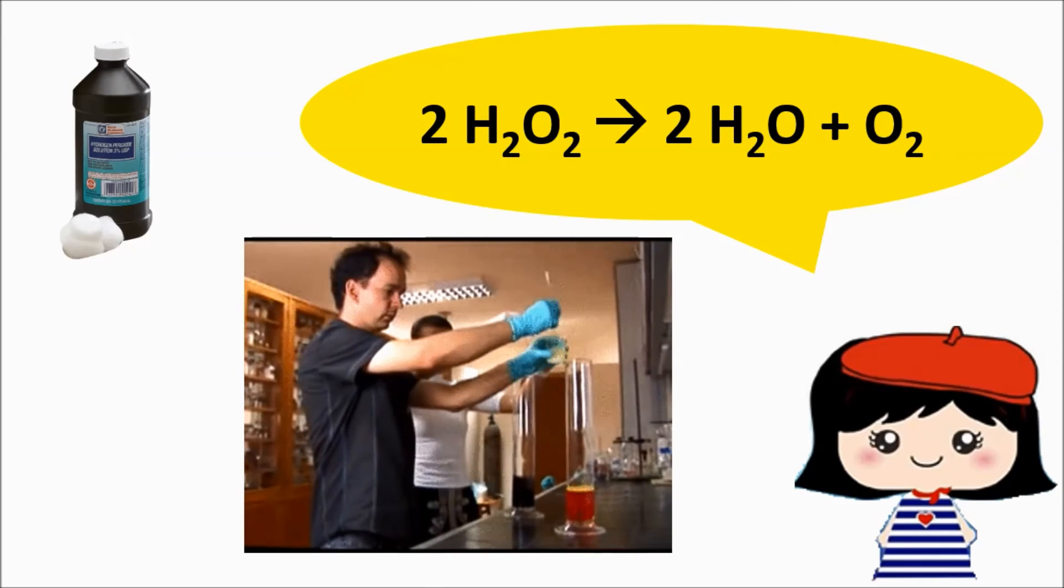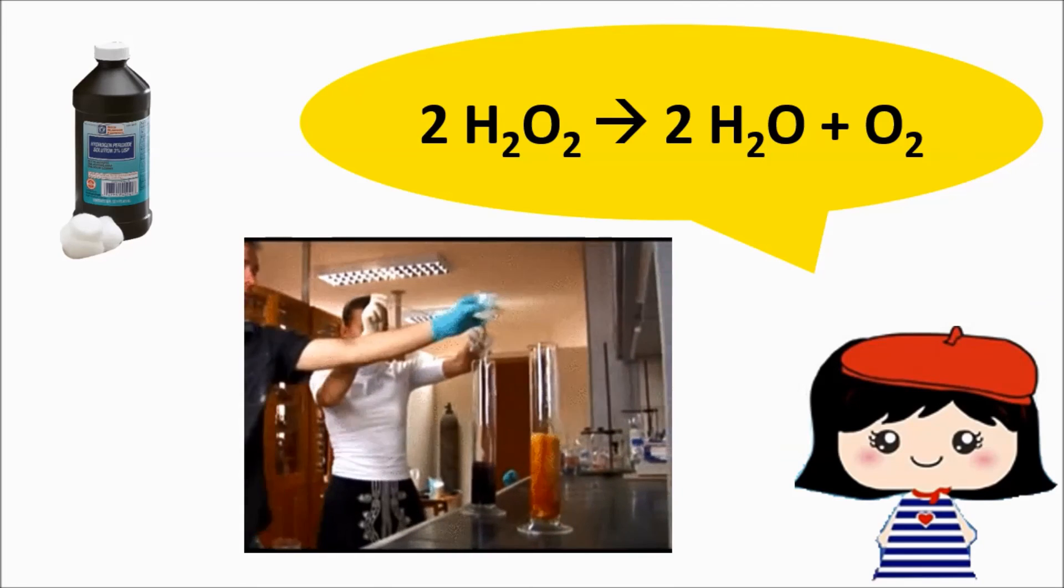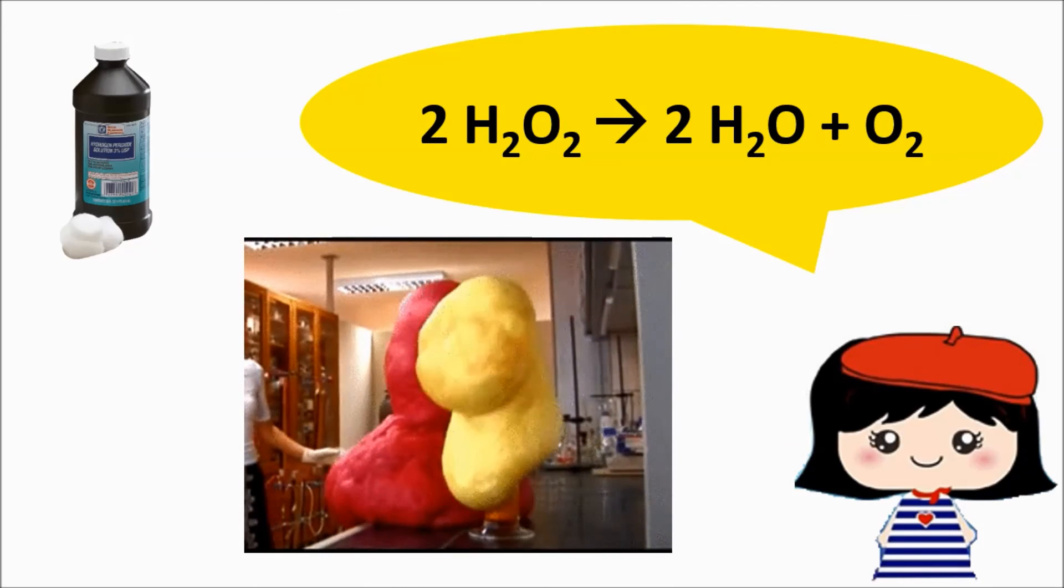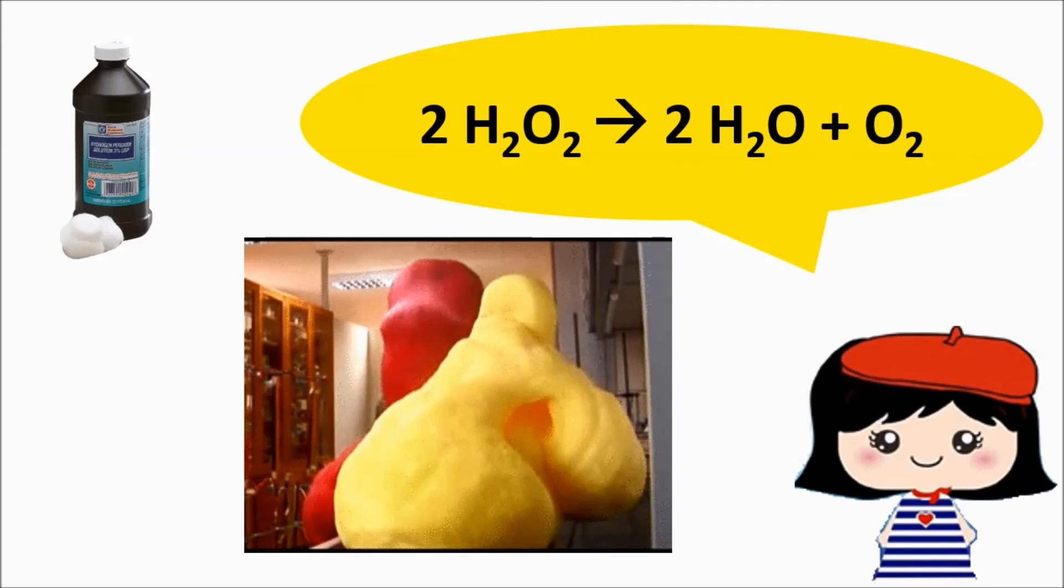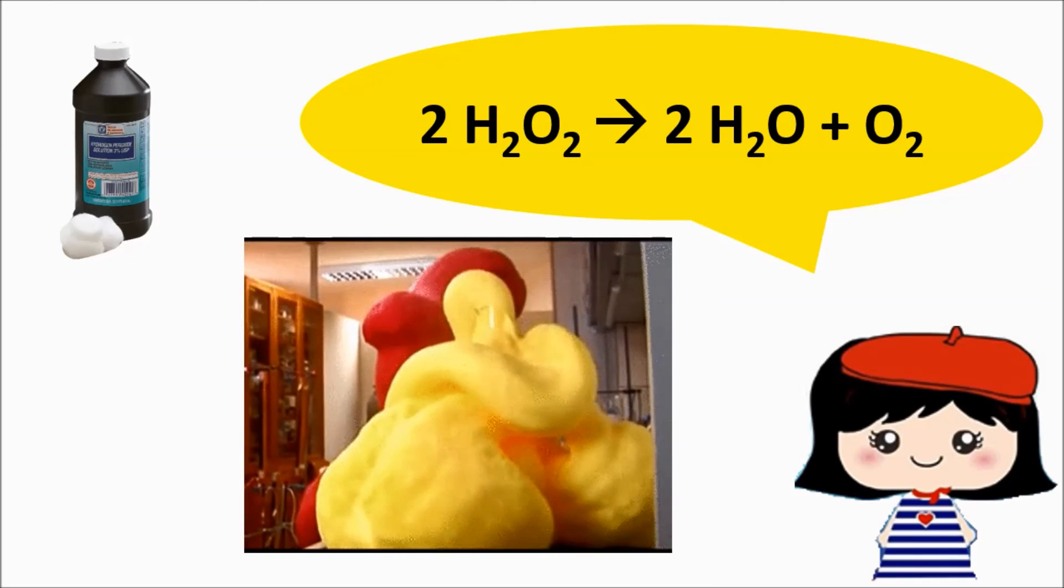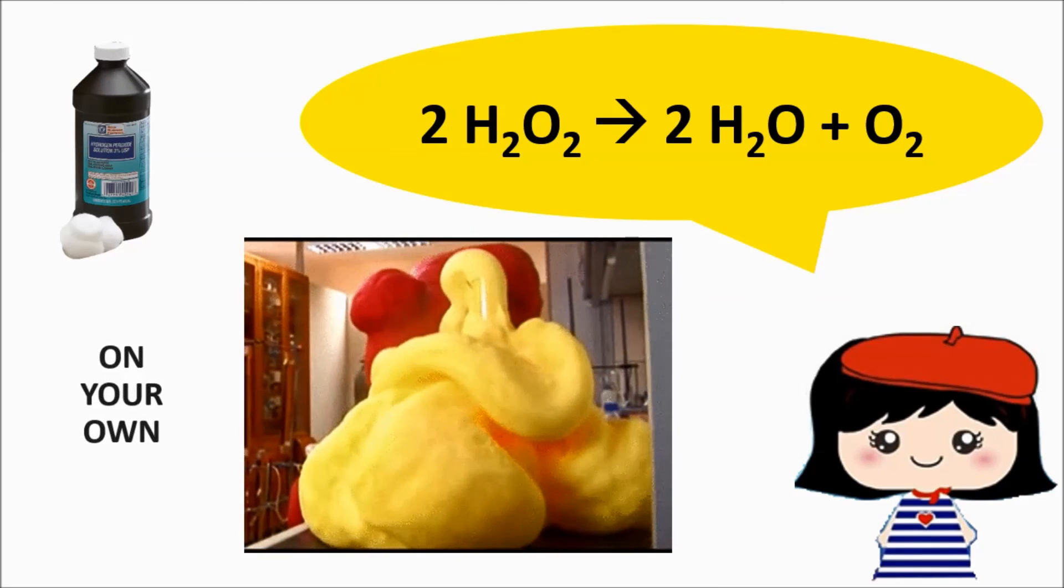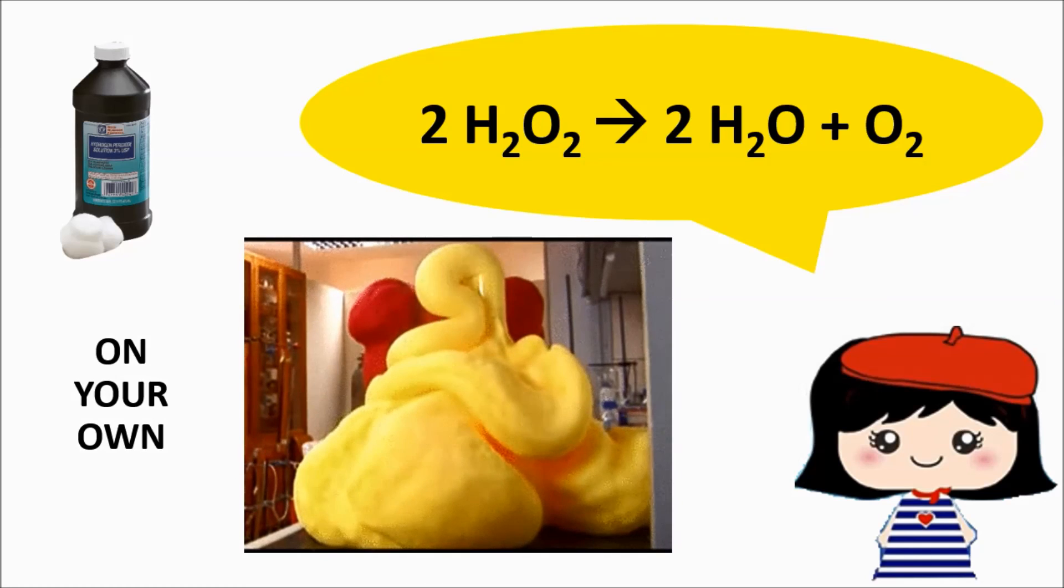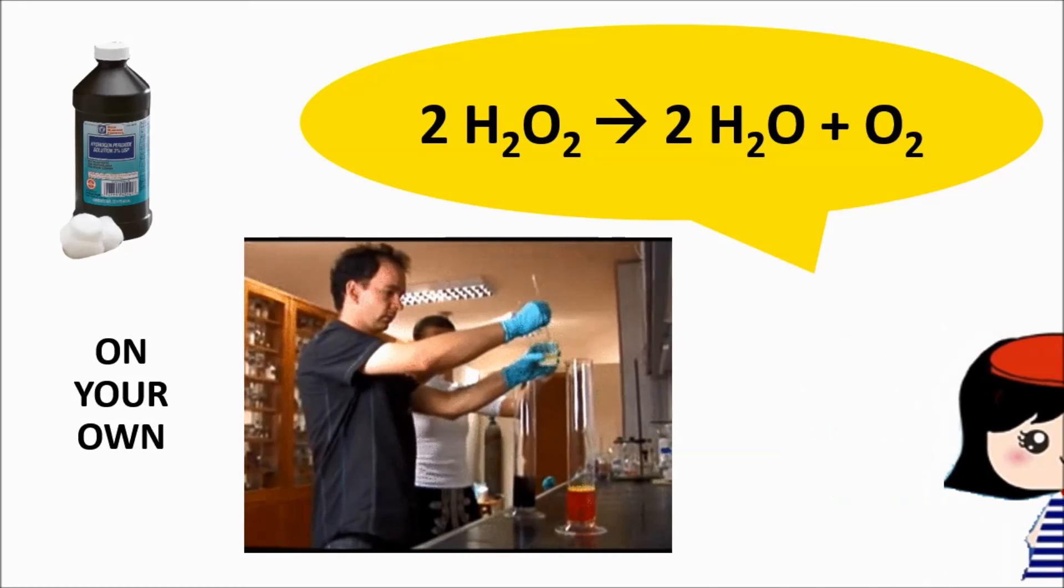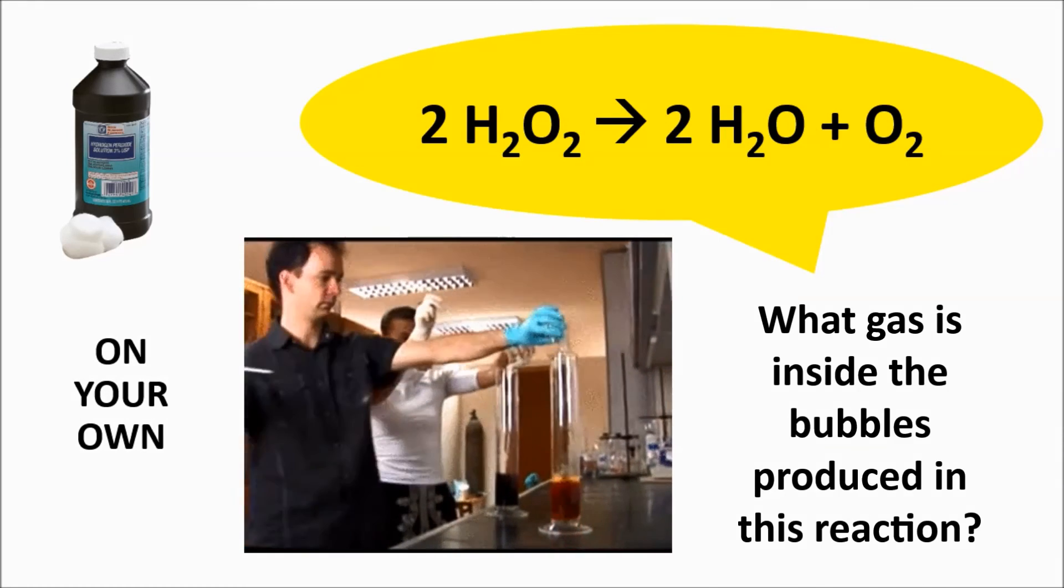Here's a fun reaction you can make with hydrogen peroxide. Just add a little food coloring, soap, and a catalyst to speed up the reaction. Now that you can speak chemical equation, here's a question for you to try on your own. Looking at the chemical equation, what gas is inside the soap bubbles produced in this reaction?